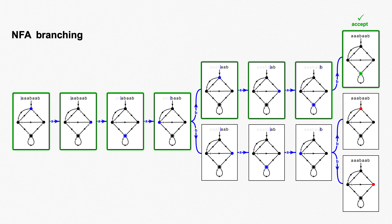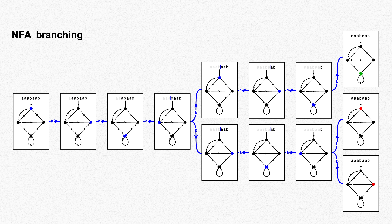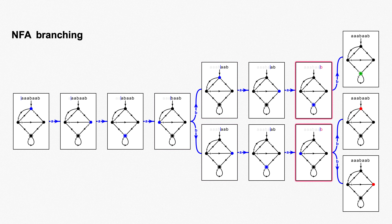Remember that it only takes one branch finishing on an accept state for an NFA to accept a string. The non-deterministic finite automaton is our simplest non-deterministic machine, and we'll get lucky in that there's a second, simpler way to represent non-determinism for NFAs. The key observation is that along each column of states, the different branches of the NFA are all in sync with one another. They all have the same string remaining to be read, and thus they'll follow transitions corresponding to the same sequence of symbols.